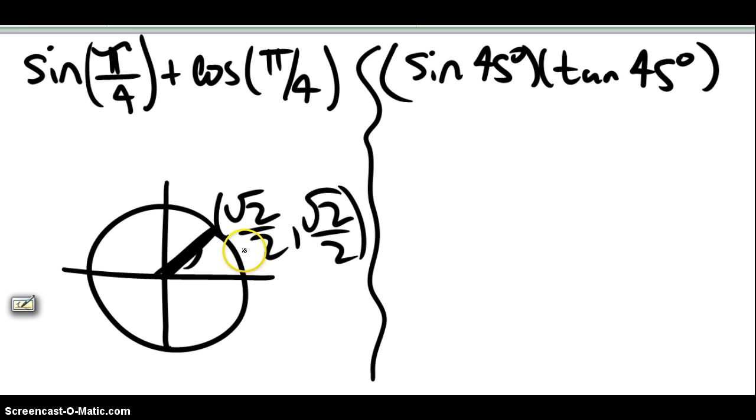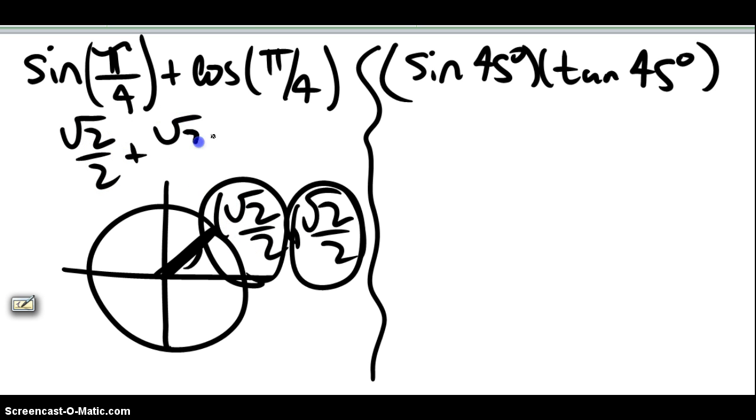Remember, the cosine is the x, it's alphabetical, the sine is the y. Okay, so for the sine, we're going to get the square root of 2 over 2. For the cosine, we're going to get this one, the square root of 2 over 2.